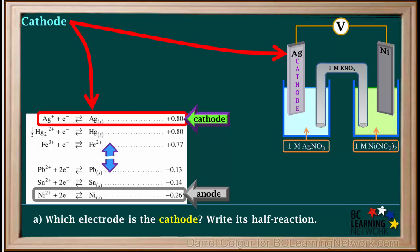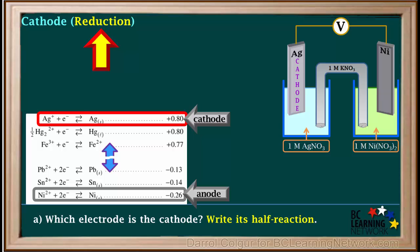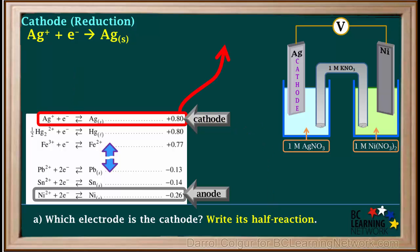We know that the cathode is the silver electrode. Remember that reduction occurs at the cathode. The reduction half reaction for Ag⁺ can be copied directly from the table, since all half reactions on the table are written as reductions. The half reaction is: Ag⁺ + e⁻ → Ag(s). Because this half reaction is not reversed, its standard reduction potential E⁰ is +0.80 volts.